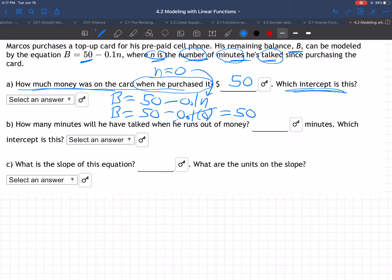Which intercept is this? The B is like Y, and N is like X. We normally have Y = MX + B, but this equation is in backwards order. This is the Y-intercept, or in this case, the B-intercept. It's the balance intercept.